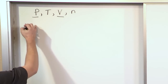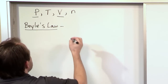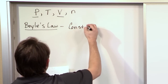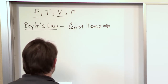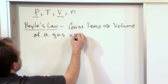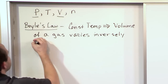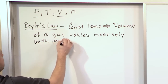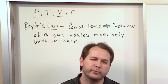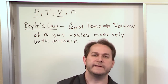Boyle's Law in words — this is how it's typically written in the book. At constant temperature, Boyle's Law states the following: the volume of a gas varies inversely with the pressure. A lot of students read this and say, what does this even mean? Basically, when you see something varies inversely, it means when one property goes up, the other property goes down. It's like a seesaw — one side goes up, the other side goes down. If something varies directly, they both go up or both go down at the same time. But that's not the case here.